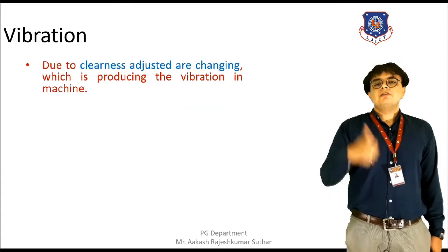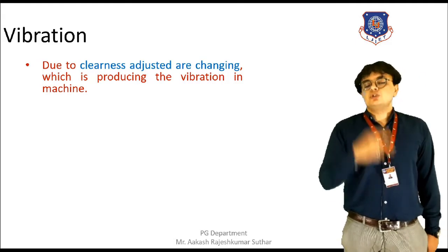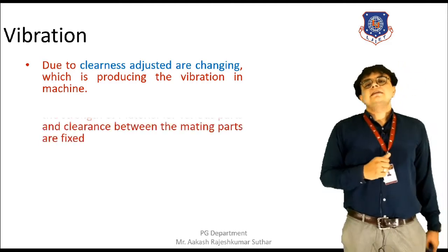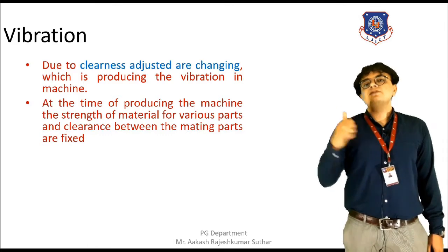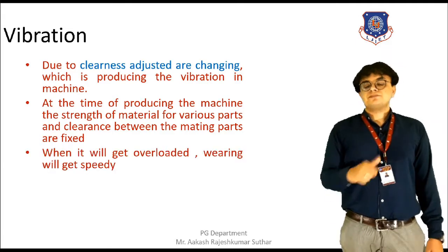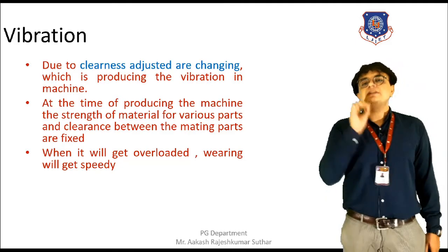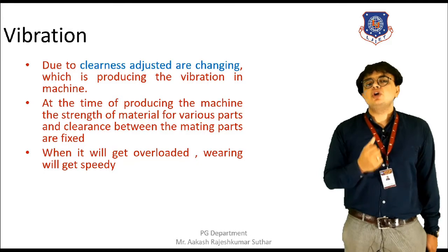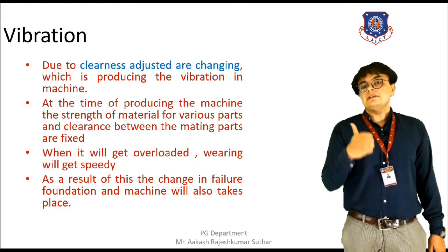Next is vibration. Vibration mainly takes place because of the change in the position of different components. When the strength of the material or various parts and the clearance of the mating surface are not as per requirement, then vibration will take place. Once the machine is overloaded, wearing will take place, working will not proceed properly as per design, and as a result, different kinds of vibration will be found on the machine. Failure can also take place and the machine will need to be repaired.